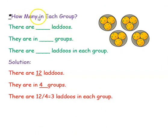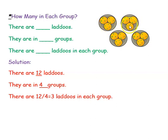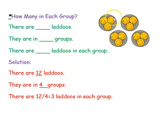Next: how many in each group? There are dash laddus — I think you all like this! We will count now: 1, 2, 3, 4, 5, 6, 7, 8, 9, 10, 11, 12. So there are 12 laddus. They are in dash groups. This is 1 group, this is 2nd group, this is 3rd group, this is 4th group. So there are 4 groups.